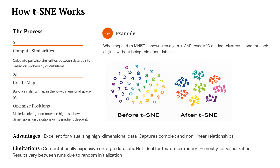t-SNE follows a three-step process. Step 1 — compute similarities: it calculates how similar each pair of data points is in the high-dimensional space using probability distributions. Step 2 — create a map: it builds a similar probability map in the low-dimensional space. Step 3 — optimize positions: it then moves the points around using gradient descent to make sure the low-dimensional relationships match the high-dimensional ones as closely as possible. For example, when t-SNE is applied to MNIST handwriting digits, it naturally forms 10 distinct clusters — one for each digit — without even being told what the digits are.